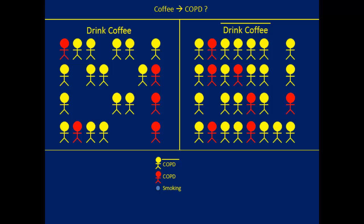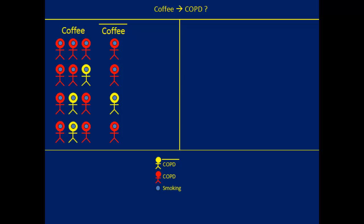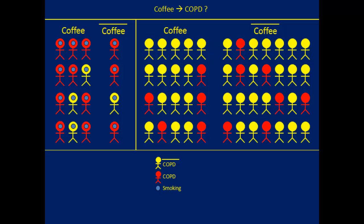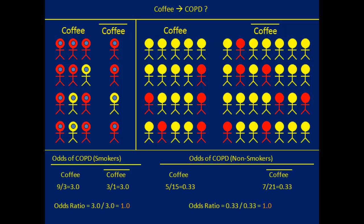Let's rearrange the problem: smokers on one side, non-smokers on the other. Among smokers, the odds of COPD in coffee drinkers is 9 divided by 3, which equals 3. The odds of COPD in non-coffee drinkers within the smoking group is also 3, calculated as 3 divided by 1. The odds ratio is 1.0 — coffee drinking and COPD are not associated among smokers. The same result holds for non-smokers: the odds ratio is also 1.0.